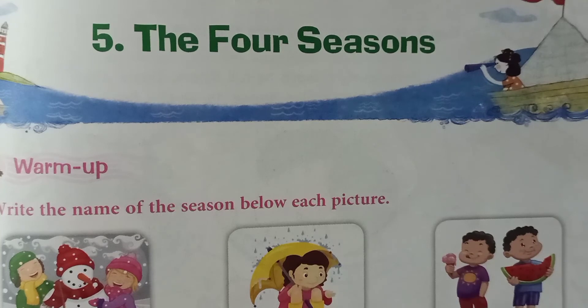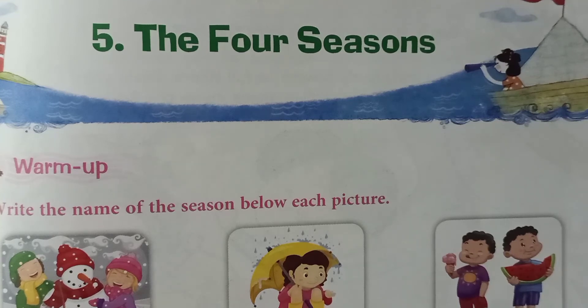The seasons start saying what their specialty is. Summer says everybody likes to swim. Winter says everybody likes to drink hot chocolate. Spring says 'I make flowers bloom.' Autumn says 'I shed leaves.' In this way they are each boasting about themselves.